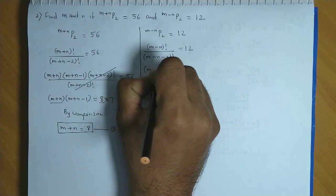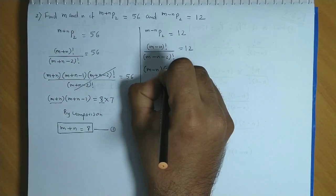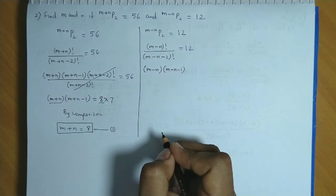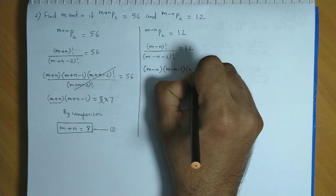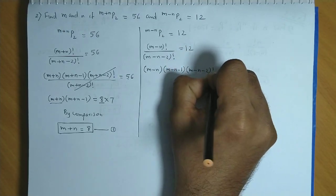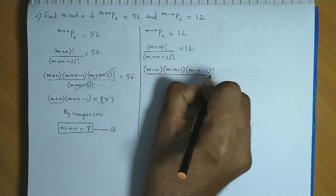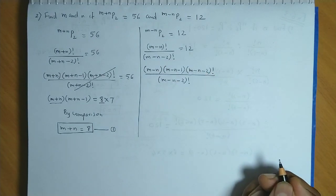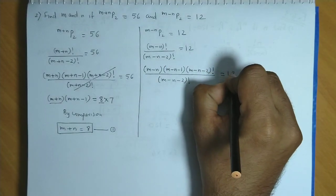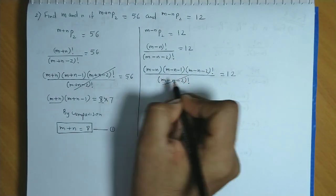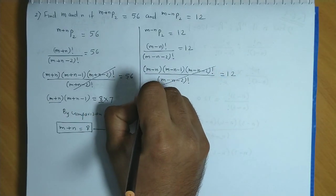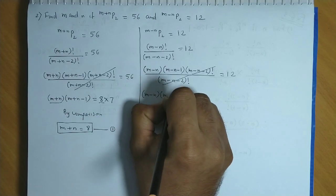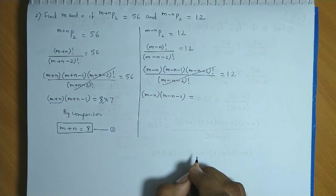So we have m minus n, then it will be minus 1, and then you have m minus n minus 1. Again if we have 1 less than this, we get m minus n minus 2 factorial divided by m minus n minus 2 factorial is equal to 12. Again this factor cancels out.